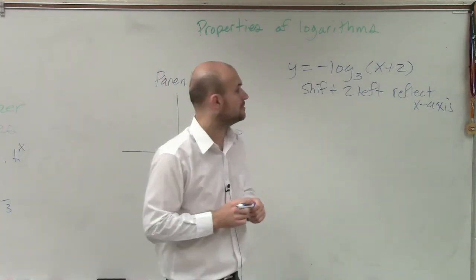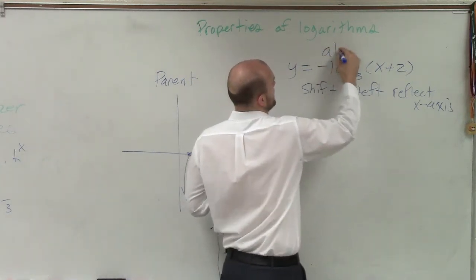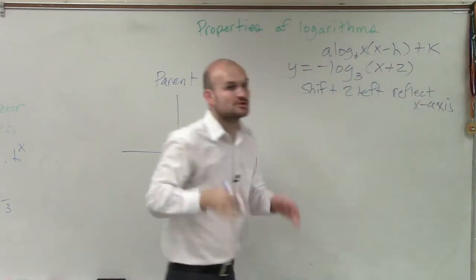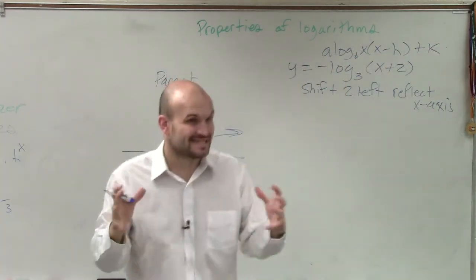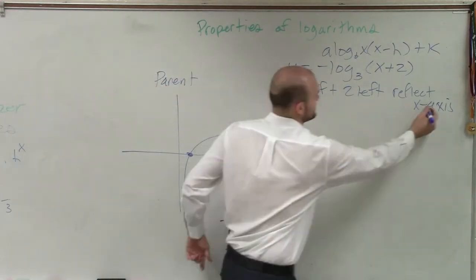Why shouldn't it go left and it goes off? Because remember, the formula is a times log base b of x times x minus h plus k. So what that means is it's always the opposite when it's inside the function. So we shift to left and reflect the x-axis.